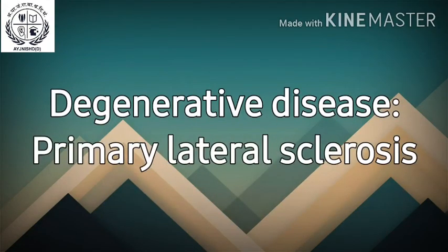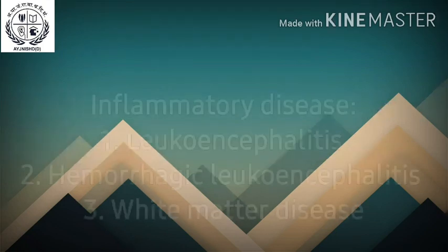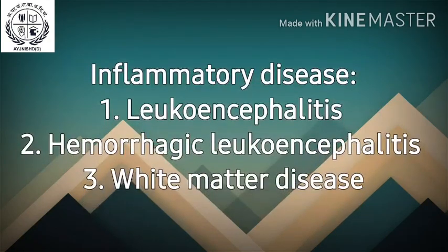Degenerative disease: Primary lateral sclerosis begins in the fifth to sixth decade, manifested by corticospinal and corticobulbar tract signs with associated loss of neurons in the motor cortex. Inflammatory disease: Leukoencephalitis is an inflammatory demyelinating disease affecting the white matter of the brain or spinal cord. In hemorrhagic leukoencephalitis, the white matter of both hemispheres is destroyed, with similar changes in the brainstem and cerebral peduncles.